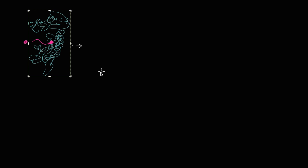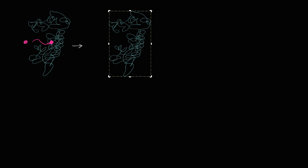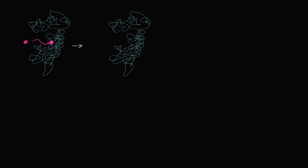Maybe it breaks up the substrate into two smaller molecules. After the reaction, the enzyme is unchanged, but a reaction has been catalyzed. We now have the substrate being broken up, in this case at least, into two smaller molecules. They just came from the active site. Once the reaction is catalyzed, they don't have the affinity to the active site anymore, and they break off.